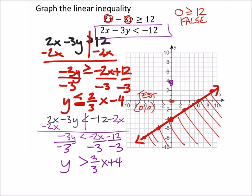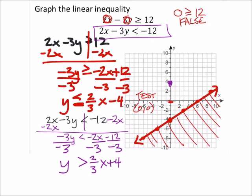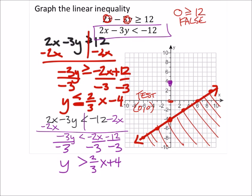So that gives me a y-intercept here at 0, 4, with a slope of 2 thirds up 2 to the right 3. Up 2 to the right 3 and so forth. And I got these other ones as well. And this one is a dashed line because it's not equal to.